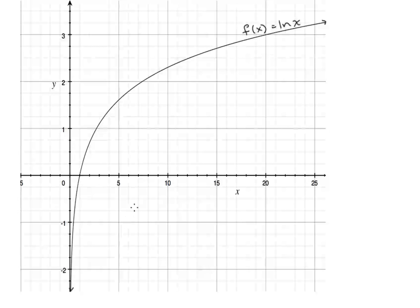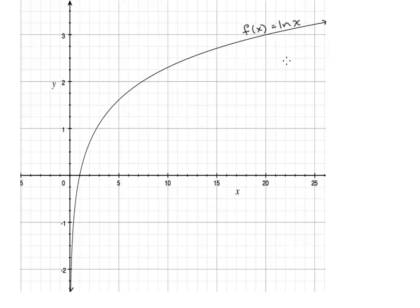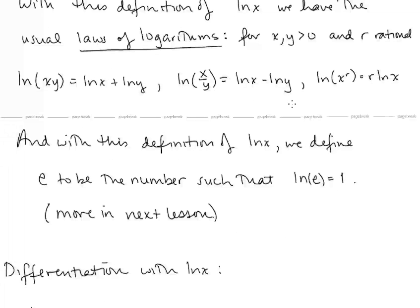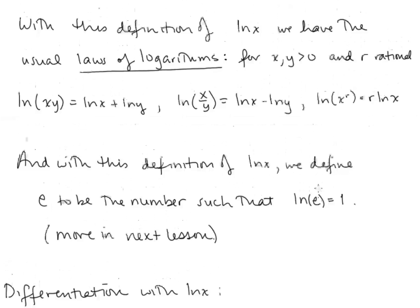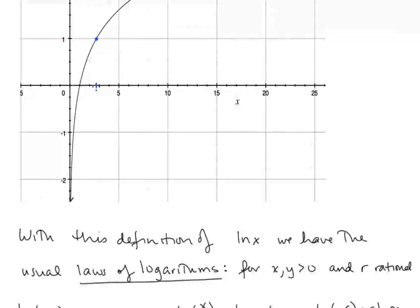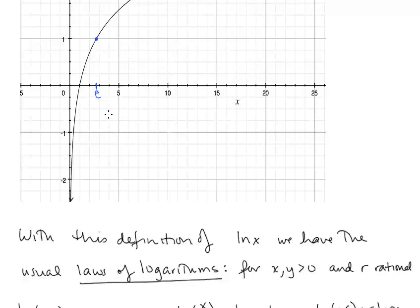Notice that ln x is strictly increasing, which says that it's a one-to-one function. So when we define e to be the number such that ln e is equal to 1, this is well defined. There is only one value x for which ln x is equal to 1, and so here is e.